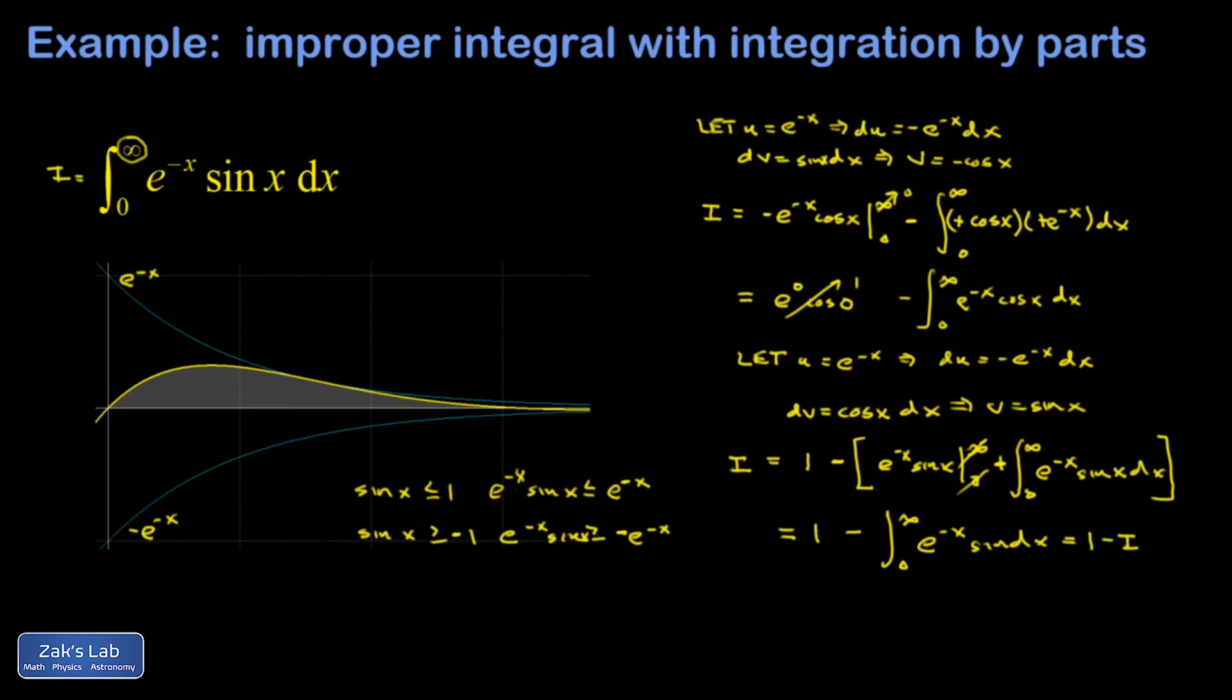So let's add I to both sides, and I end up with 2I = 1, which means my integral evaluates to 1/2. So I integrate this thing, I get a finite area, and it comes out to this beautiful answer of 1/2.